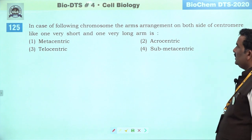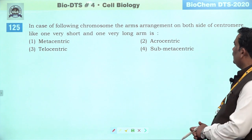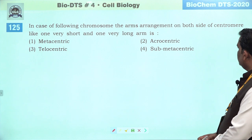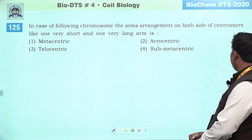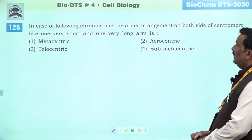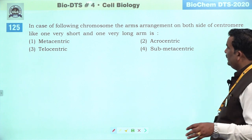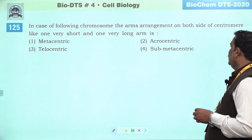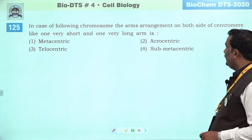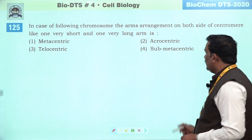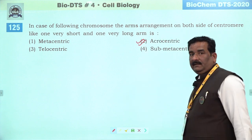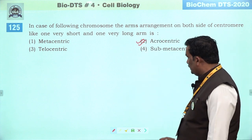Next question: in case of the following chromosome, the arms arrangement on both sides of the centromere — one is very short and one very long. Very short ka matlab hai ki acrocentric ki aur baat kar raha hai. Second is the right answer.